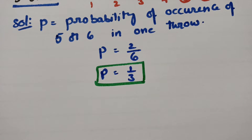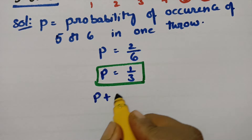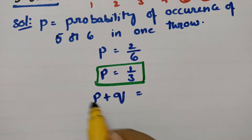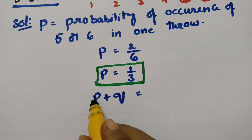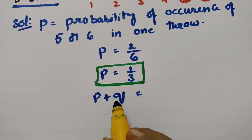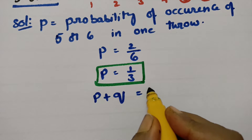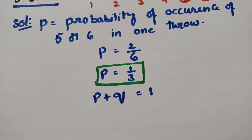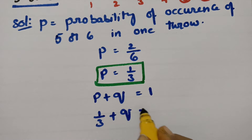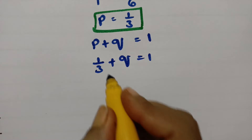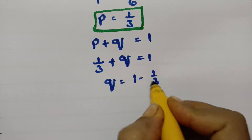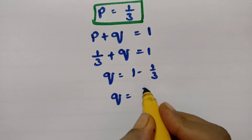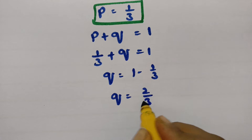We know that the total probability P plus Q always equals 1. That is, the probability of occurrence of 5 or 6 plus the probability of not getting 5 or 6 equals 1. So 1/3 + Q = 1, which gives Q = 1 − 1/3 = 2/3.